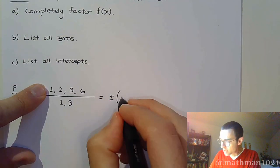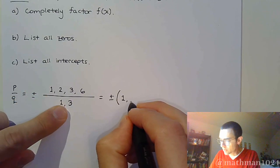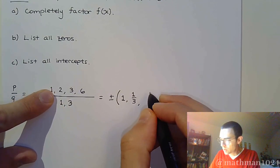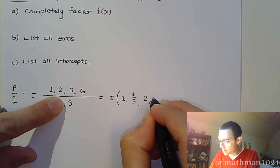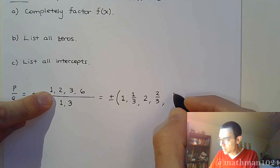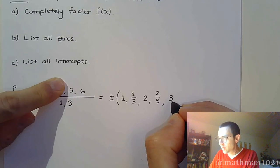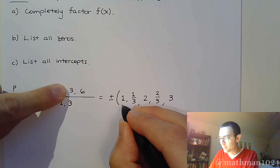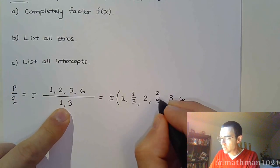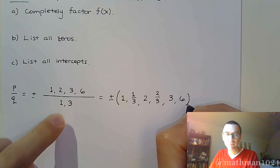So, if I try to put all this together to list all of the possible rational zeros. Okay, so 1 over 1 is 1. 1 over 3 is 1 third. 2 over 1 is 2, and then I get 2 thirds. 3 over 1 is 3. 3 over 3 is 1, so I have that. 6 over 1 is 6.